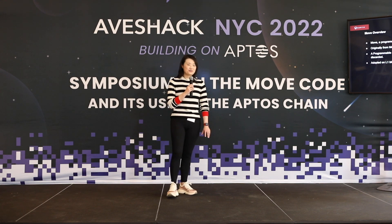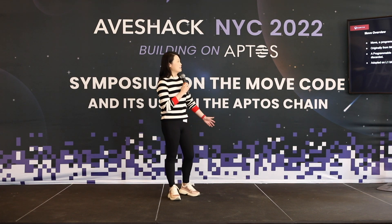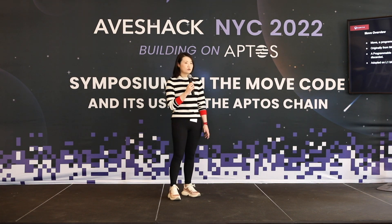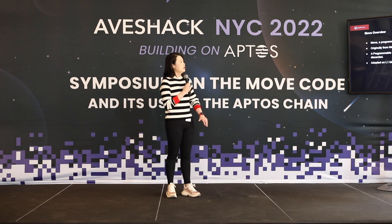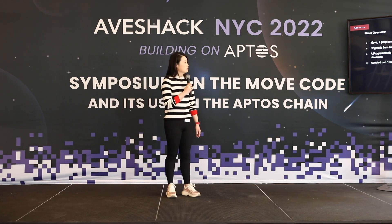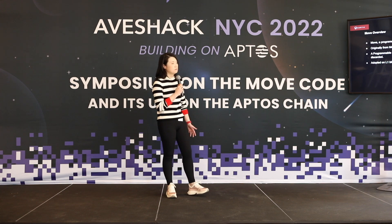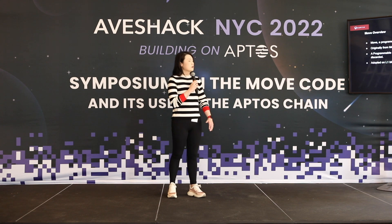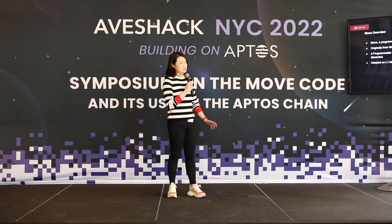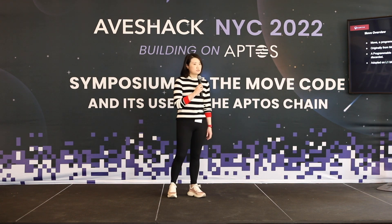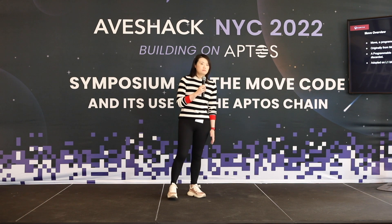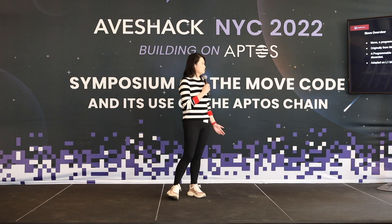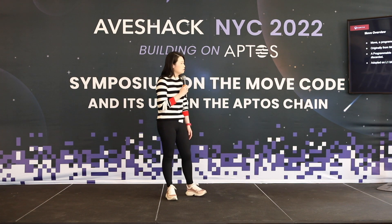A quick overview about Move. It's a programming language for smart contracts that works on the Aptos blockchain, originally from the Diem project at Meta. It's resource-based, meaning that some of the resources cannot be copied or implicitly discarded. Right now it has been adopted in a few of the layer-one solutions, and Aptos is one of them.